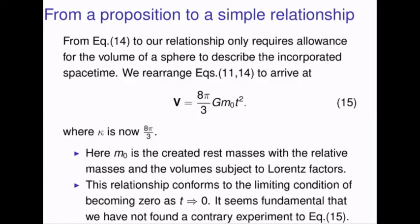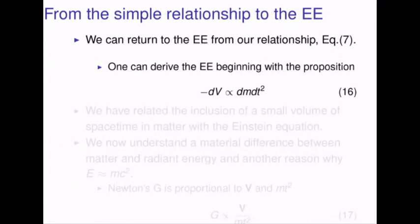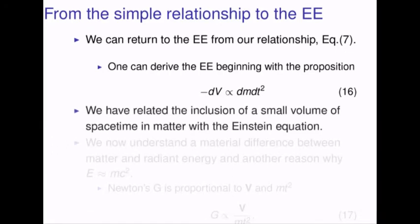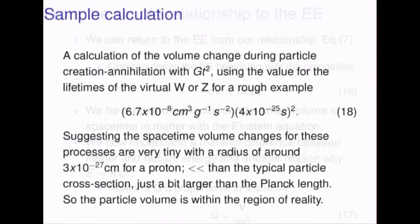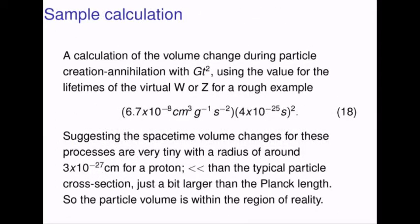We can return to the Einstein equation from our relationship, equation seven. One can derive the Einstein equation beginning with proposition sixteen. We have related the inclusion of a small volume of spacetime in matter with the Einstein equation, and we now understand a material difference exists between matter and radiant energy. This is another reason why E is equivalent to mc squared but not identical to mc squared. And we see a very interesting equation seventeen, where Newton's G is proportional to the volume incorporated over the mass and the time of incorporation squared. We can run a quick sample calculation: we can calculate the volume change during particle creation-annihilation with Newton's G times t squared, using the value for the lifetimes of the virtual W or Z particle for a rough example, as done in equation eighteen.